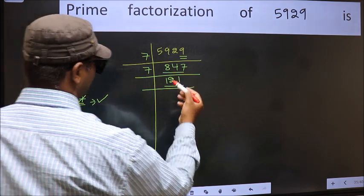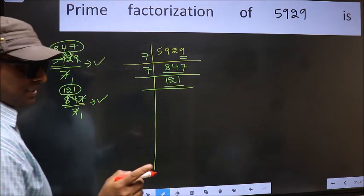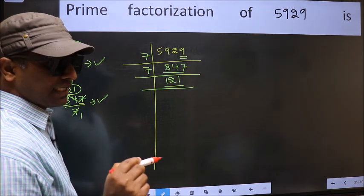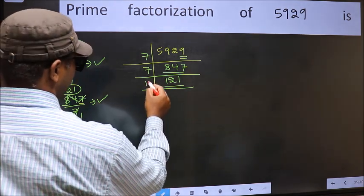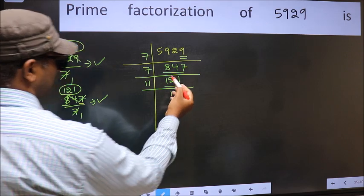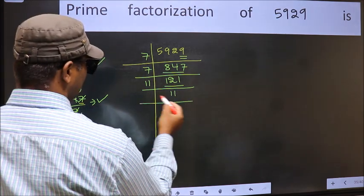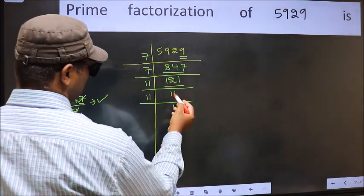Now we have 121. Always remember 11 into 11 is 121. That is 11 times 11 is 121. Now we have 11, 11 is a prime number. So 11 once, 11.